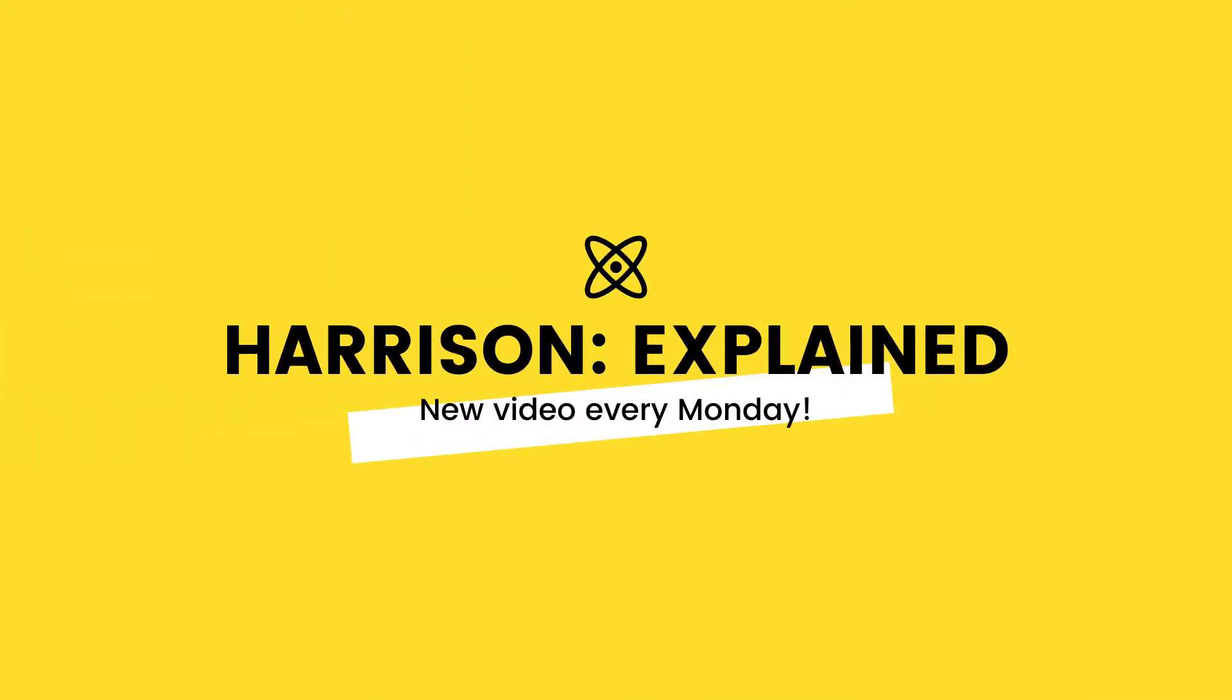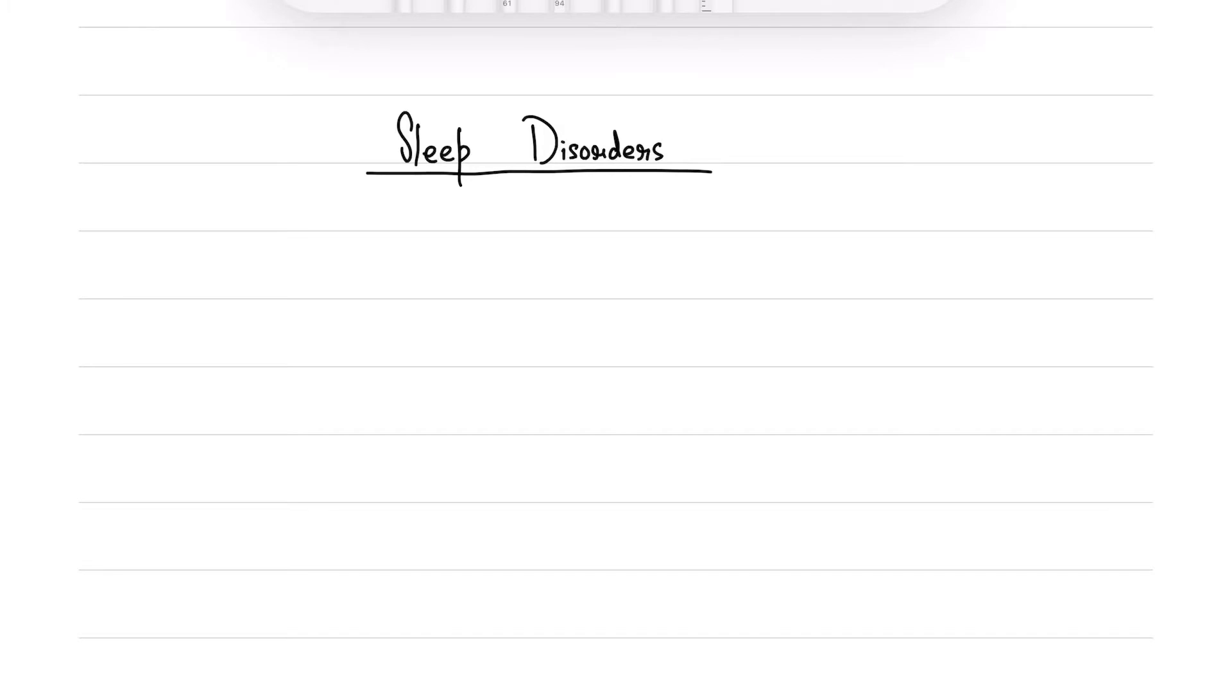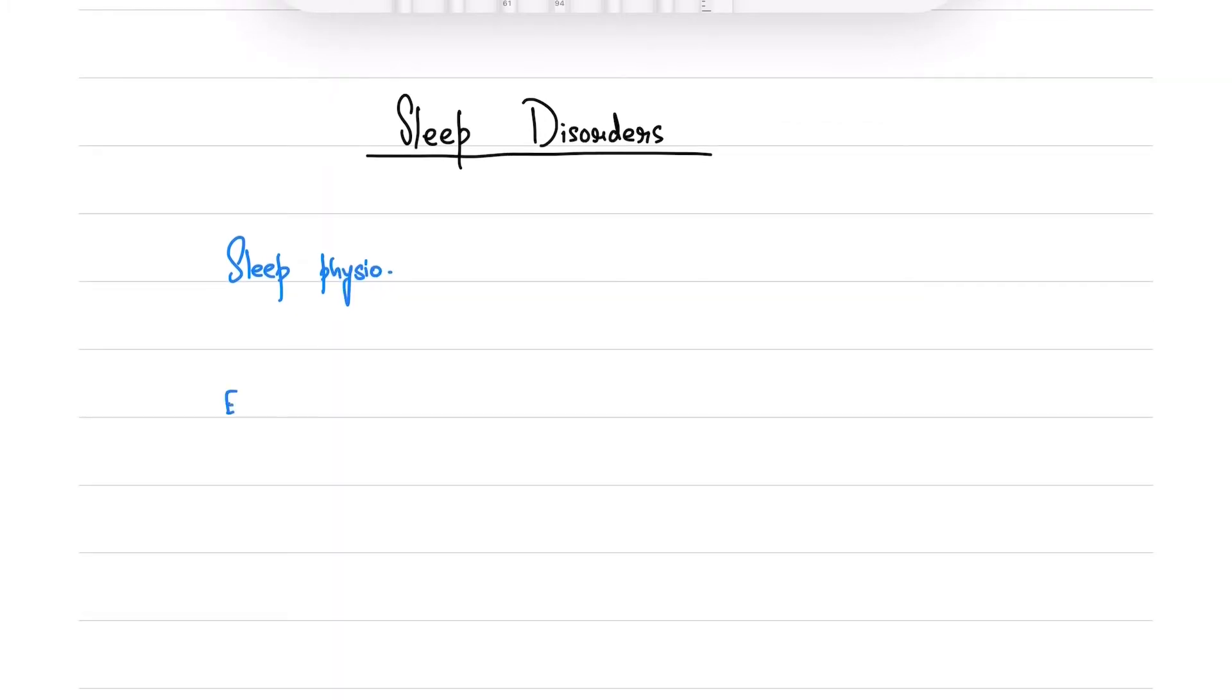Hello everyone, welcome back to another episode of Harrison Explained. Today we're going to discuss sleep disorders. Sleep disorder is a pretty broad topic, so here's a summary of what we'll be covering in this video. We'll start with basic sleep physiology, then move on to the effect of sleep on body physiology, which will help us understand the pathophysiology of some diseases. Finally, we'll discuss prominent sleep disorders like narcolepsy, insomnia, and parasomnias, which include REM sleep behavior disorder among others.